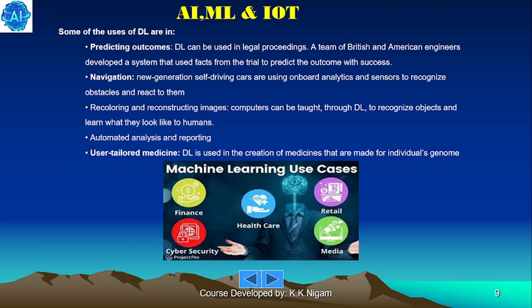Navigation: new generation self-driving cars are using onboard analytics and sensors to recognize obstacles and react to them. Recoloring and restructuring images: computers can be taught through DL to recognize objects and learn what they look like to humans. Automated analysis and reporting. User-tailored medicines: DL is used in the creation of medicines that are made for an individual's genome.